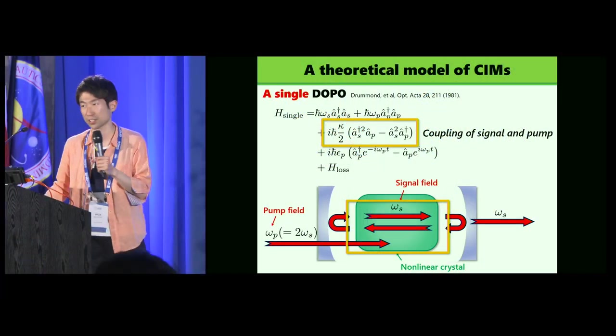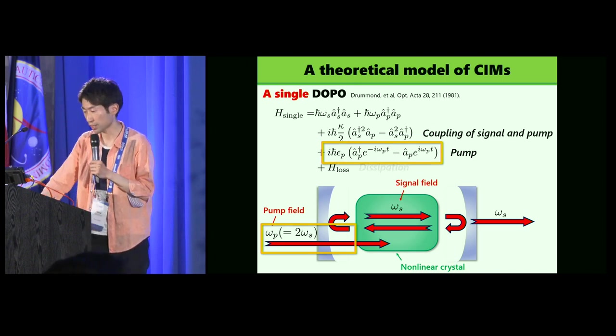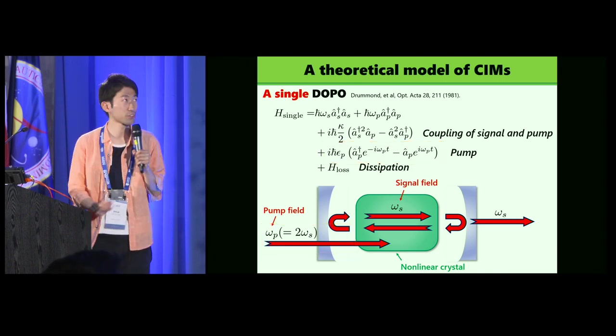This is a Hamiltonian, and the first line is for free Hamiltonian, and the second one is coupling of pump and a signal and a pump in the nonlinear crystal. The third one is pump injecting from the outside. This is an open quantum system, so we consider also dissipation at loss Hamiltonian.